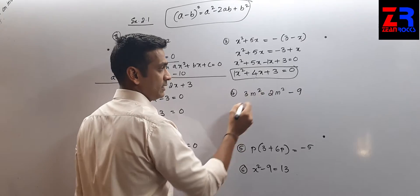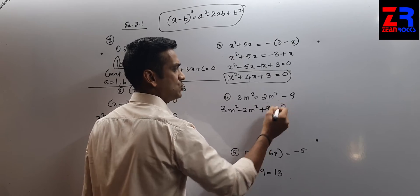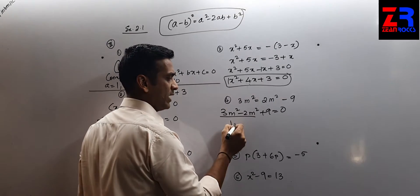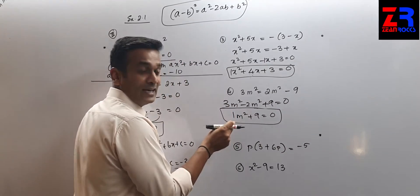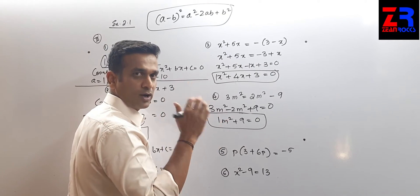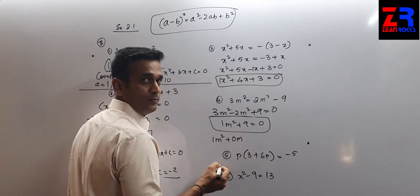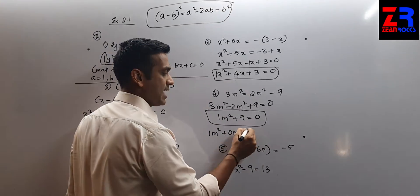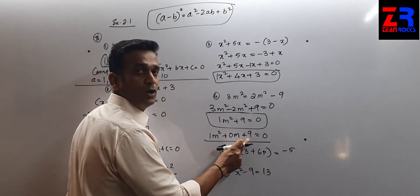Question number 4: 3m² minus 2m² + 9 = 0. Taking all terms on the left-hand side: 3m² minus 2m² = 1m², so 1m² + 9 = 0. But this is only two terms, and there is no middle term. So I write 1m² + 0m + 9 = 0, since 0 times any number is 0. Comparing, we get a = 1, b = 0, and c = 9.